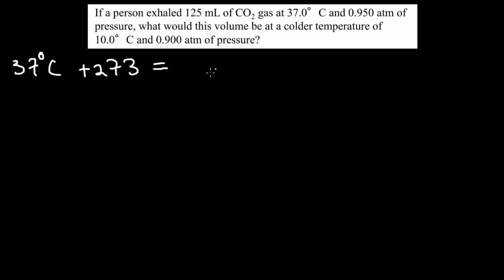Now we'll use PV = nRT. If a person exhaled 125 mL of carbon dioxide gas at 37°C and 0.95 ATM of pressure, what would this volume be at 10°C and 0.90 ATM? We have two situations: the first gives us everything except moles, and the second gives us only pressure and temperature. We need to find moles first, then use them to find the new volume.